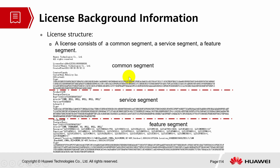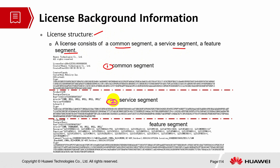Let's look into the license background information. These are the license structures. The license consists of a common segment, a service segment, and a feature segment. The first part is the common segment, the second part is the service segment, and the third part is the feature segment.